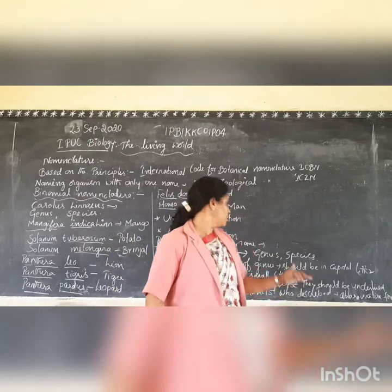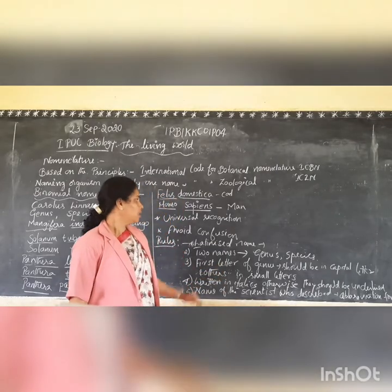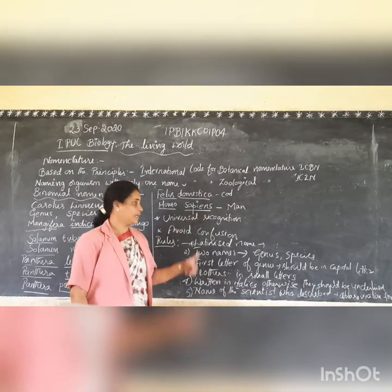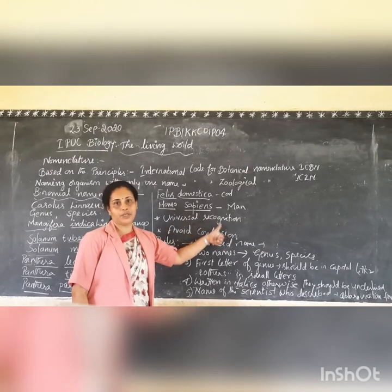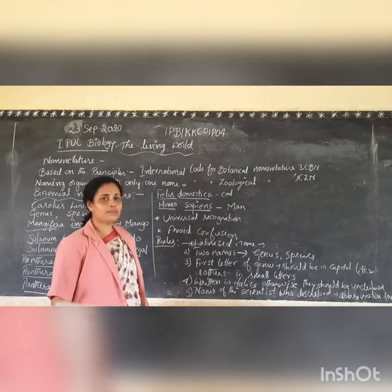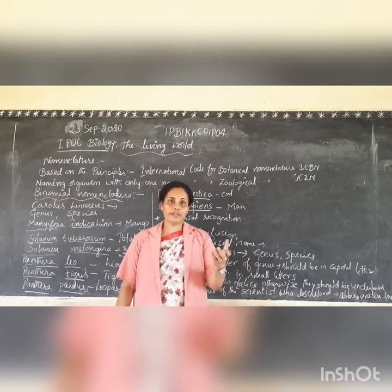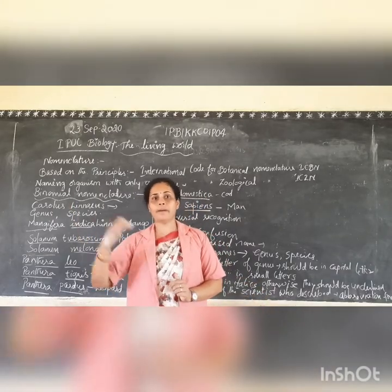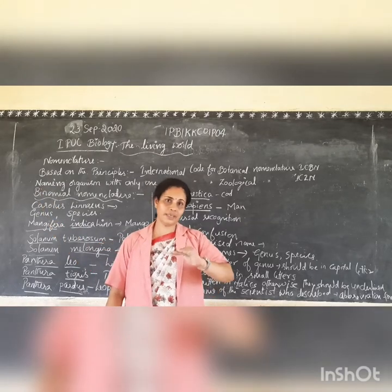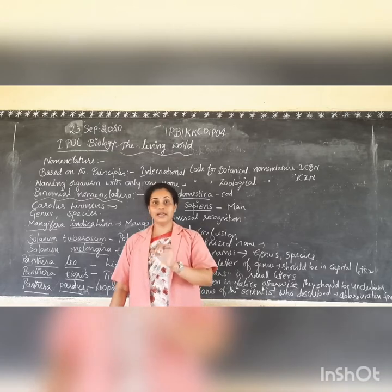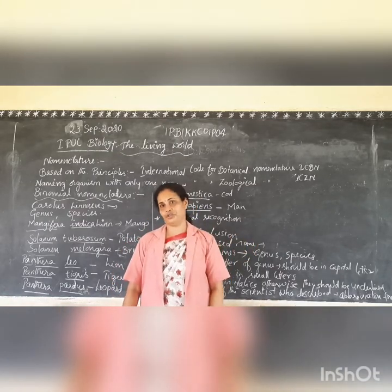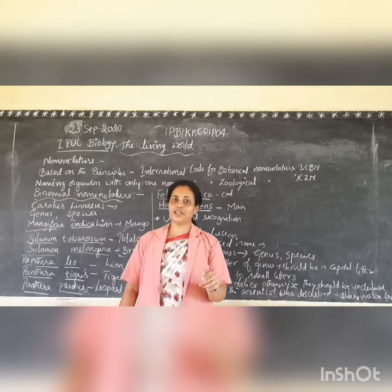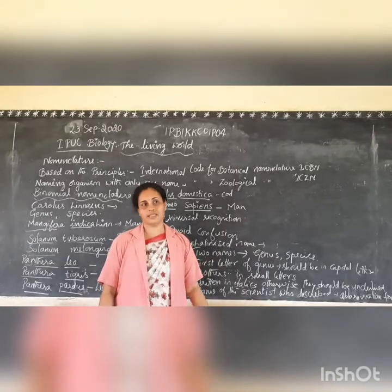There are some rules when writing scientific names. Scientific names are mainly recognized all over the world — this is called universal recognition. Scientific names also avoid confusion, because if you call an organism by its local name it may change from place to place and language to language, causing confusion. So in order to avoid confusion, scientific names are given through binomial nomenclature.